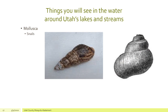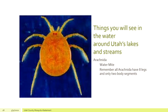Another one is the mollusks. These are snails — pretty easy for you to find. You'll find those in all of the lakes, rivers, ponds, streams, and reservoirs. They are very prevalent in the waters of Utah. Again, this is another example of an invertebrate.